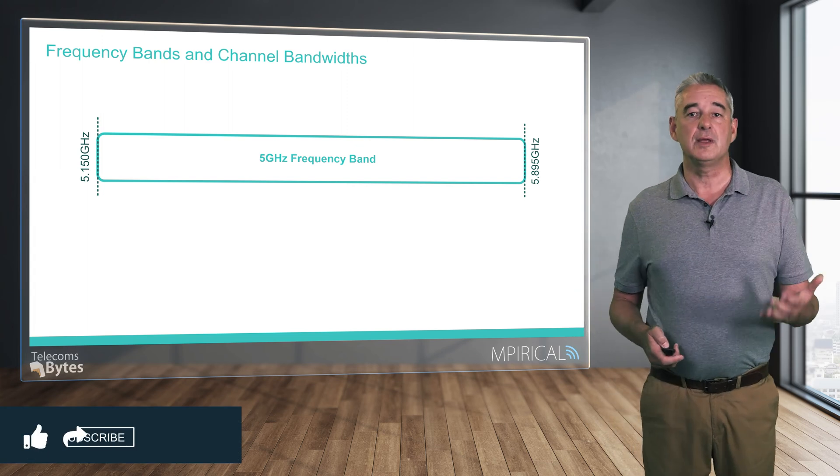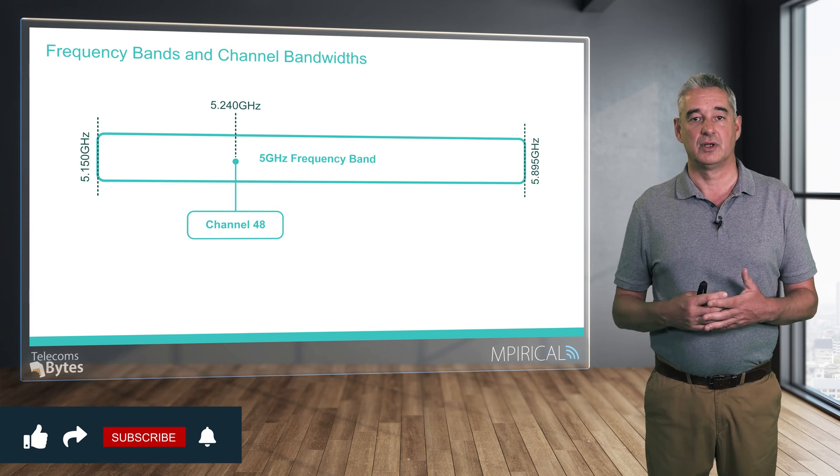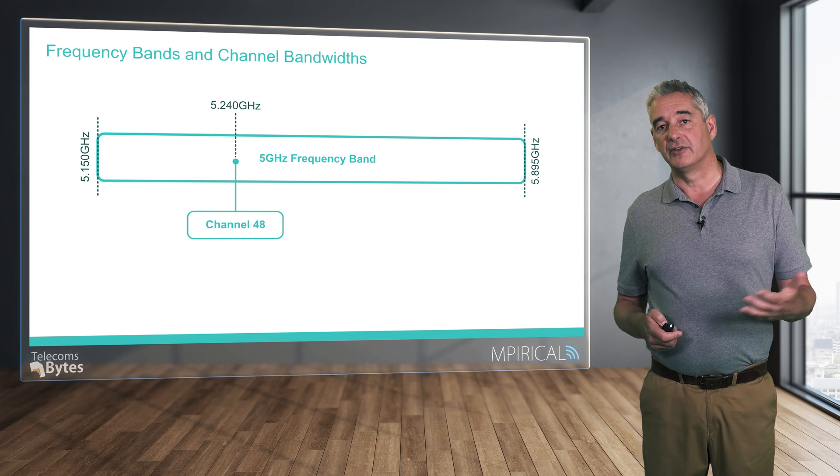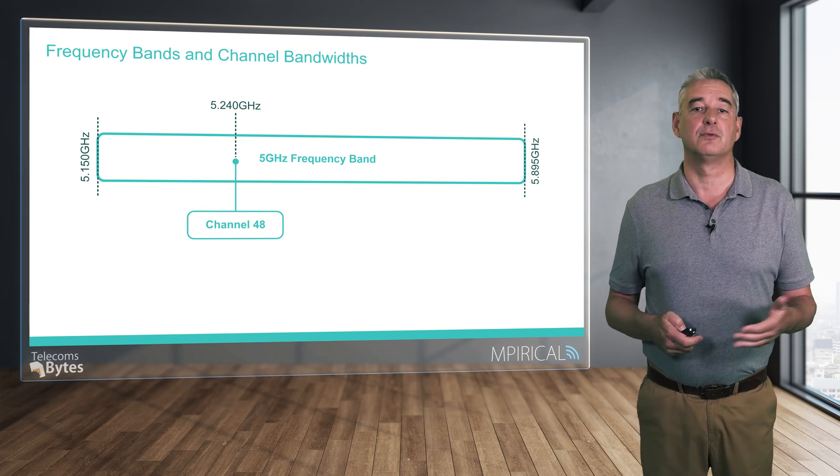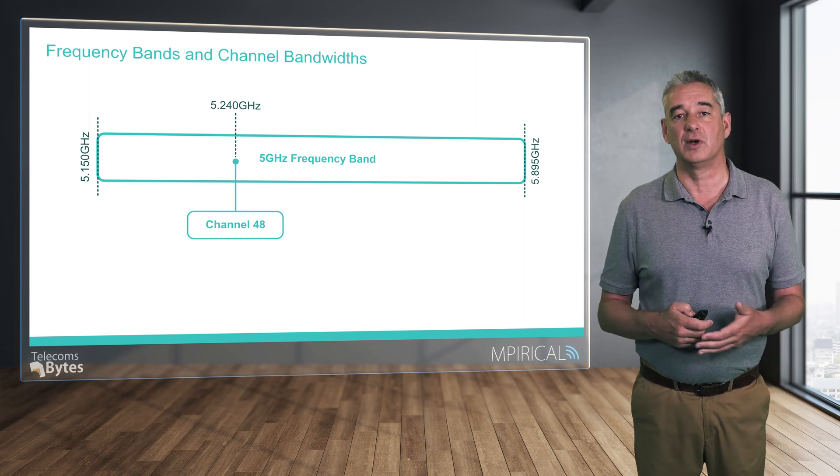The frequency band is then subdivided into several channels which will be utilized by the Wi-Fi network. In our example, we have focused on channel 48, which is centered on the frequency 5.24 gigahertz.